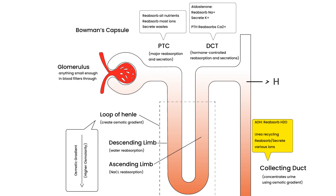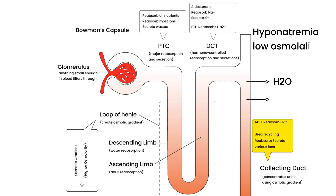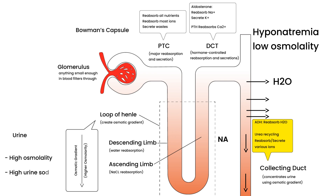The osmolality of the blood serum is also going to be low — you have more water, less solute, so low osmolality of the serum. Now let's concentrate on the urine. The urine is more concentrated, so you have a high osmolality in the urine, because more water is coming back and less water is going out. And very similarly, because more water is going back, more sodium is coming out, so you have a high urine sodium.